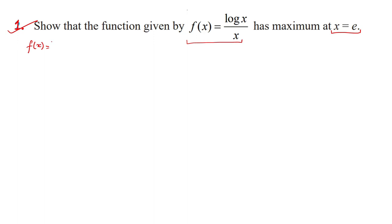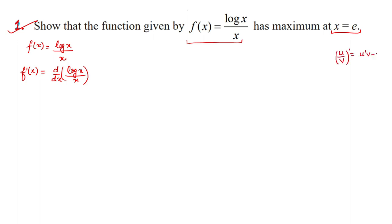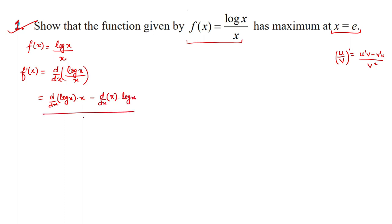Question 1: Show that the function f(x) = log(x)/x has a maximum at x = e. Our function is f(x) = log(x)/x. First, we find the derivative f'(x) = d/dx of log(x)/x. Since log(x) and x are both functions, we apply the quotient rule: u derivative times v as-is, minus v derivative times u as-is, divided by v squared.